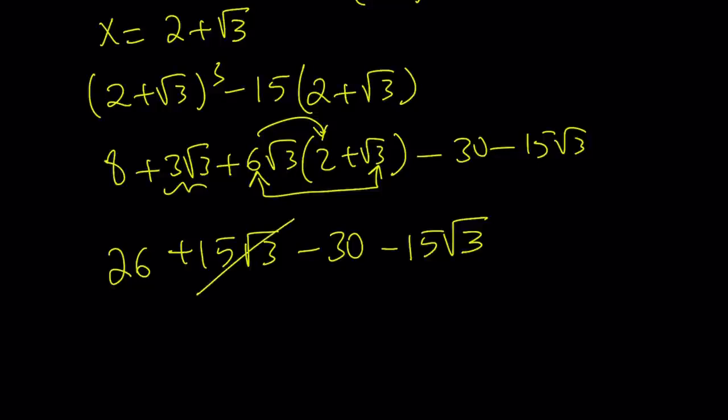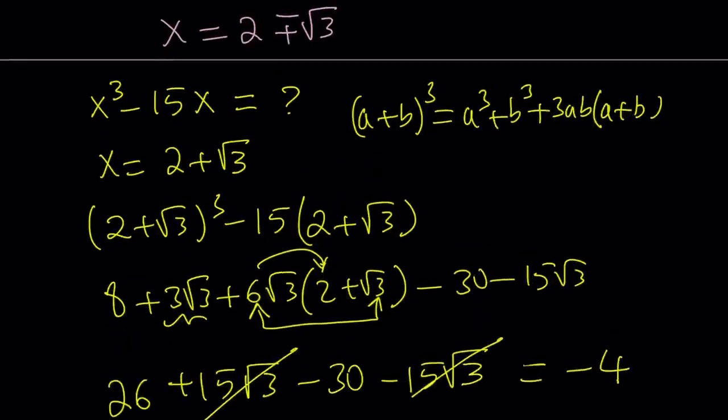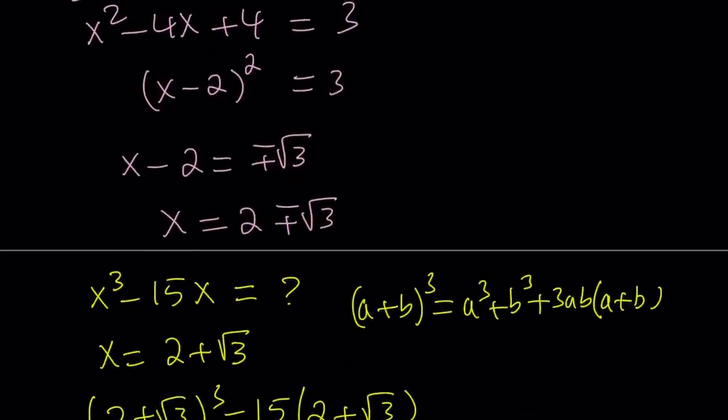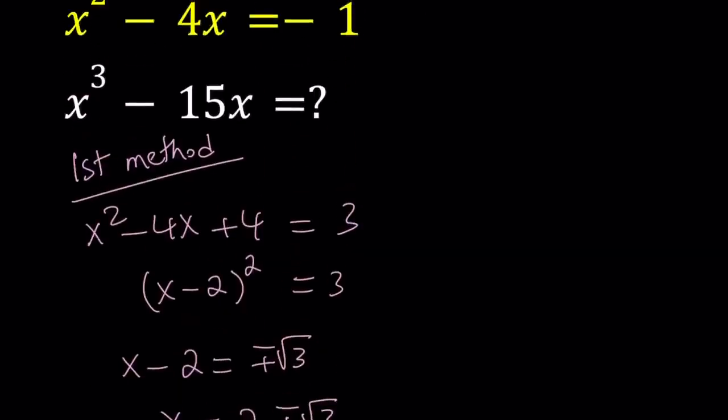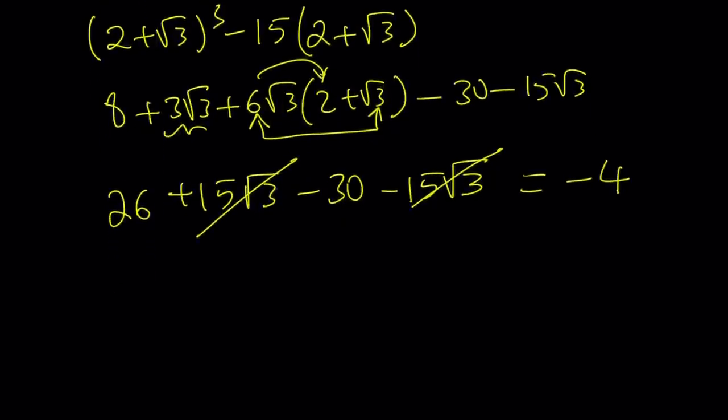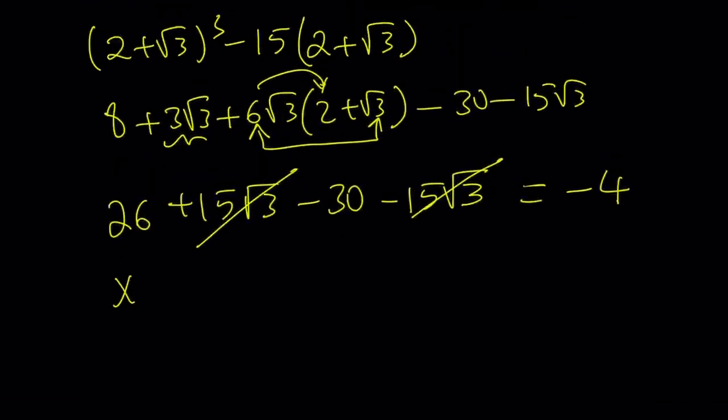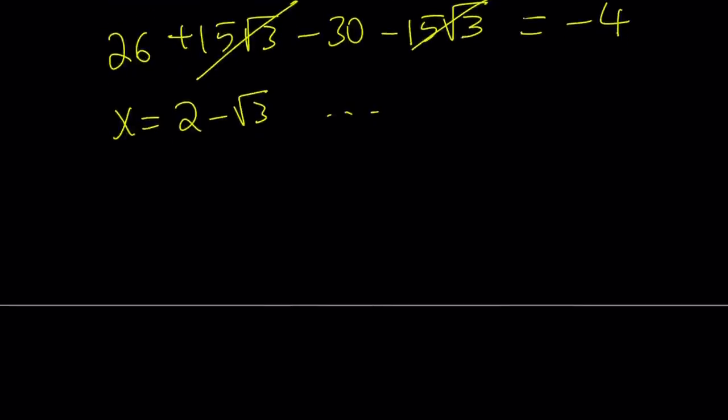So 15 root 3 cancels out, and that leaves us with 26 minus 30, which is equivalent to negative 4. So the value of x cubed minus 15x is negative 4 if x squared minus 4x equals negative 1. All right, great. So we used x equals 2 plus root 3. And what happens if x equals 2 minus root 3? Do we get the same answer? That's for you to test. So I'm going to leave that open, and you can definitely test it out and see what happens.